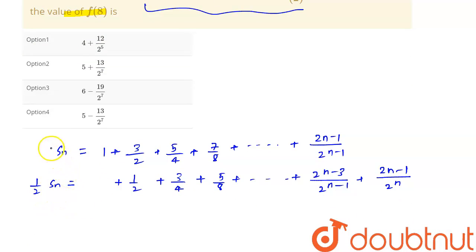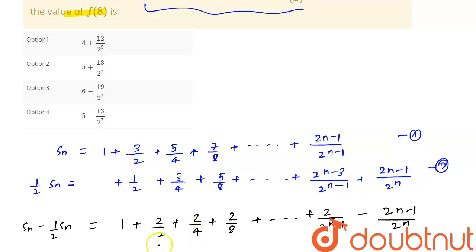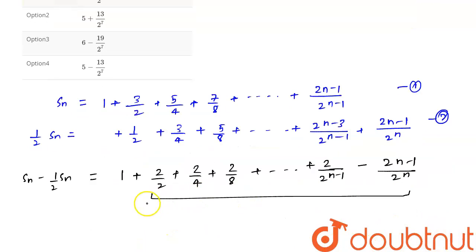Now, labeling these as equations 1 and 2, we subtract equation 2 from equation 1. So Sₙ − (1/2)Sₙ gives: 1 + (3/2 − 1/2) + (5/4 − 3/4) + (7/8 − 5/8) + ... which simplifies to 1 + 2/2 + 2/4 + 2/8 + ... This gives us (n−1) terms in the middle.